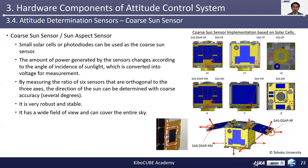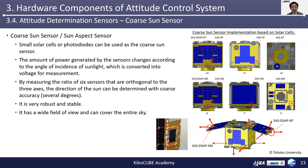The next sensor is the coarse sun sensor, also called a sun aspect sensor. Small solar cells or photodiodes can be used as a coarse sun sensor. The amount of power generated by the sensors changes according to the angle of incidence of sunlight, which is converted into voltage for measurement. By measuring the ratio of six sensors on each surface of the satellite orthogonal to the three axes, the direction of the sun can be determined with an accuracy of several degrees. It is very robust and stable, has a wide field of view, and can cover the entire sky. An implementation example in the case of microsatellite LISAT is illustrated on the right-hand side.